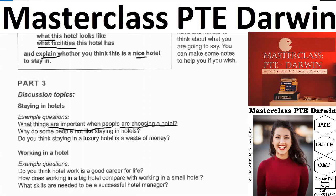A full sample answer for the follow-up question: 'When choosing a hotel, people should consider the following aspects: the security and location of the hotel, because we need to be close to the tourist spot or place of business and it needs to be secure so you don't lose your valuables. Another thing to consider is the price and the services — if the price tag is very high it would not be affordable and would be out of our budget.'